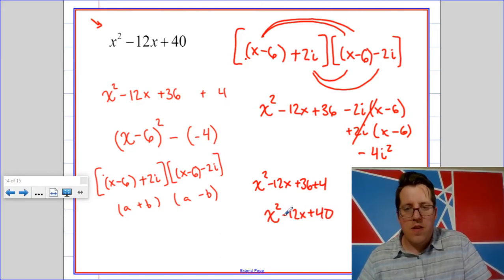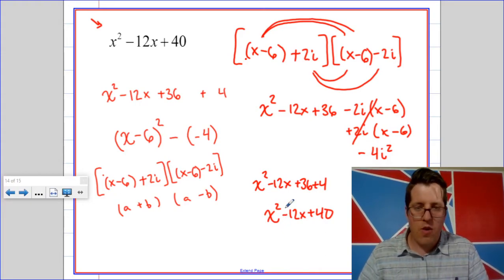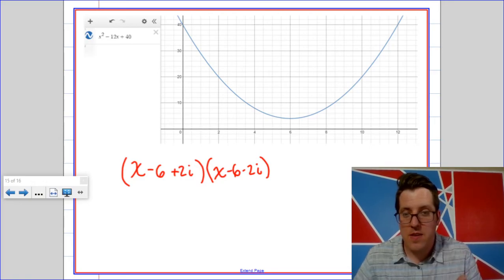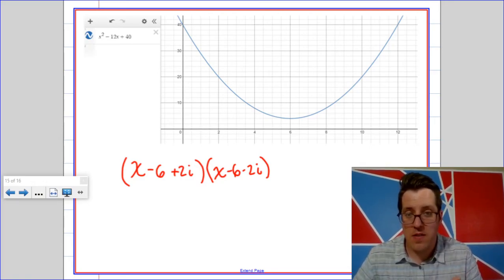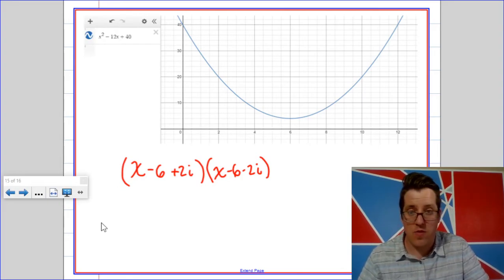Okay, now let's take it one step further. This is really cool. Let's take a look at a graph. So here's a graph of x squared minus 12x plus 40. Obviously it doesn't cross the x-axis because it doesn't have any real zeros.